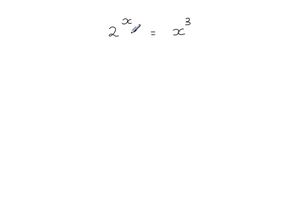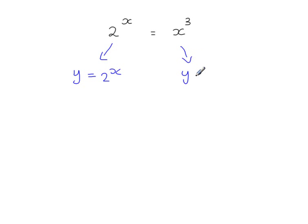This equation here — 2 to the power of x is equal to x cubed — is an example of an equation that you cannot solve using algebraic methods. So we're going to solve this using a numerical method. We'll start by looking at the graphs of y = 2^x and y = x³ together, and we can see at which point they intersect, which will be the solution to this equation.